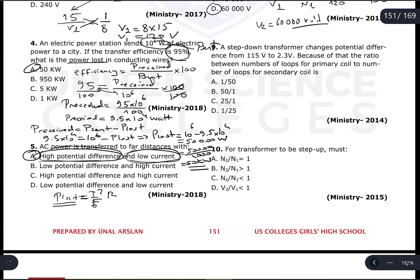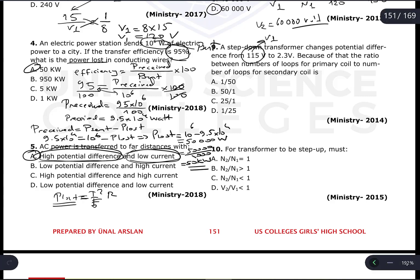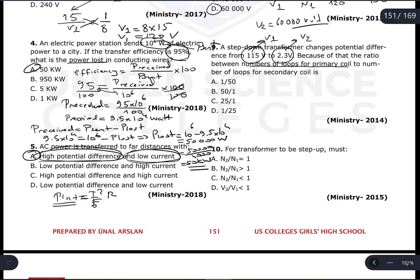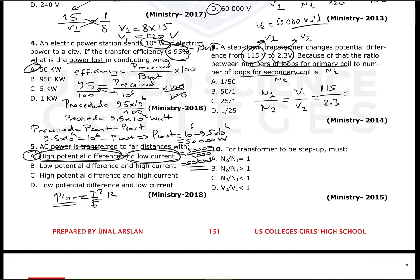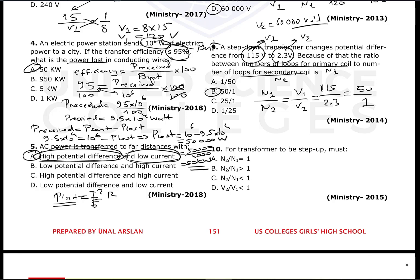Question 9: A step-down transformer changes potential difference from 115 volts (V1) to 2.3 volts (V2). What is the ratio N1/N2? Since the number of turns and potential difference are directly proportional: N1/N2 = V1/V2 = 115 / 2.3 = 50. So N1/N2 = 50/1, and the answer is 50.